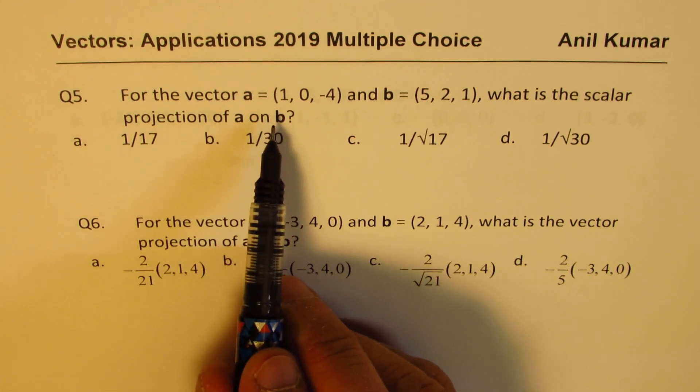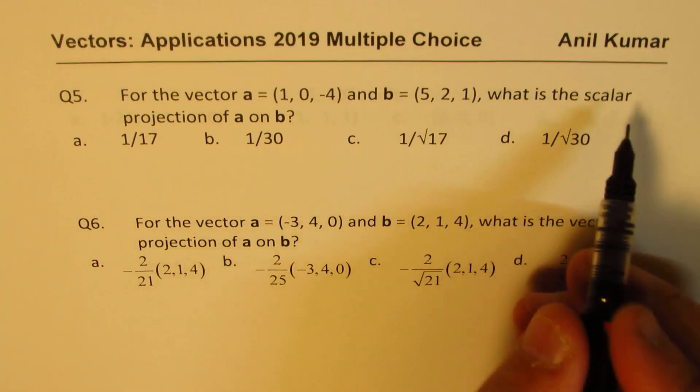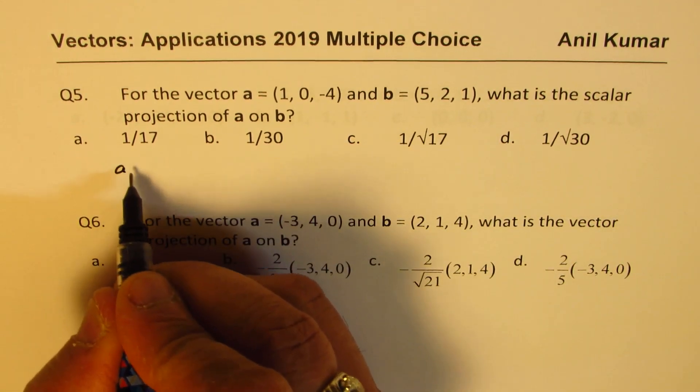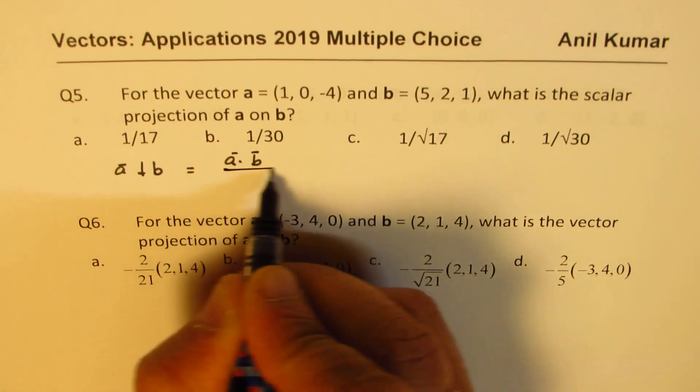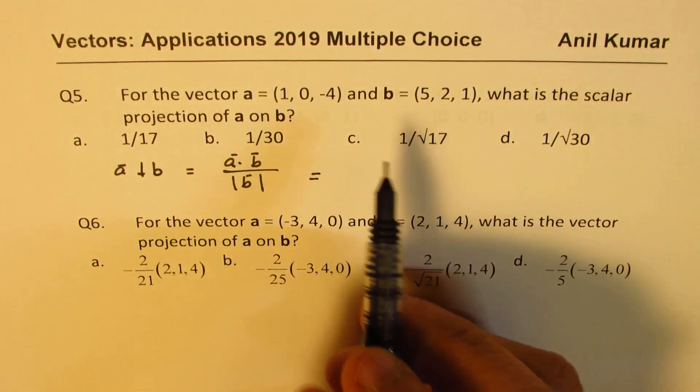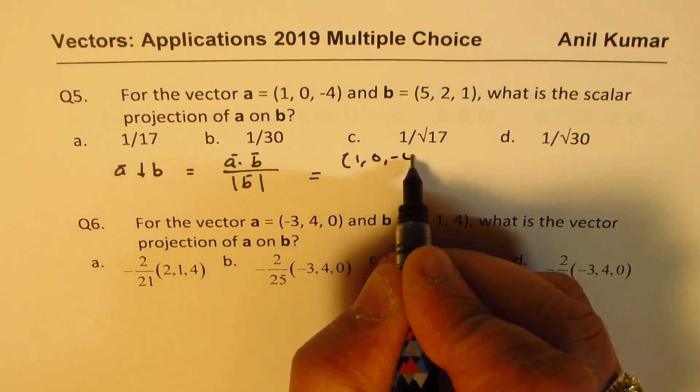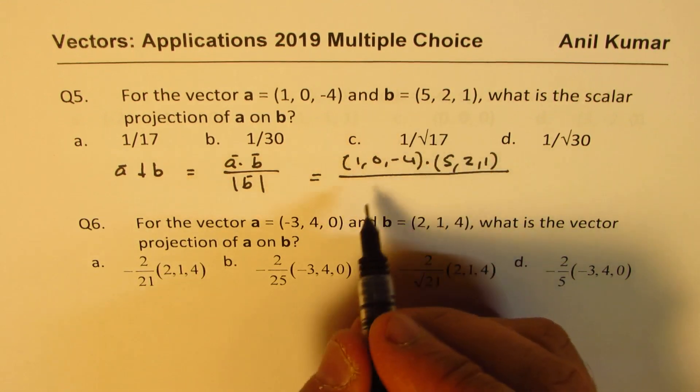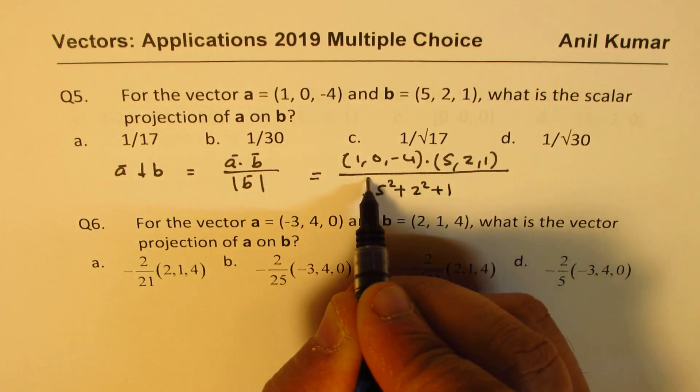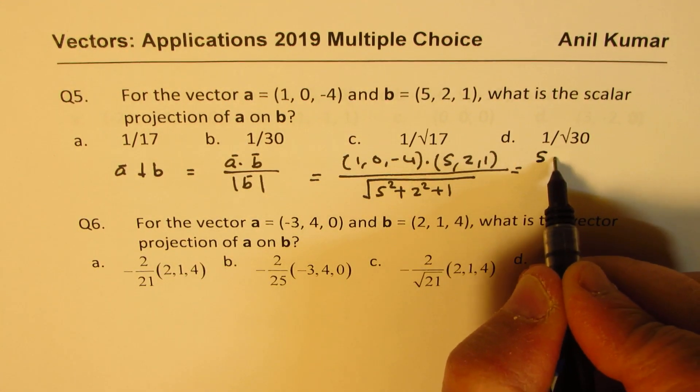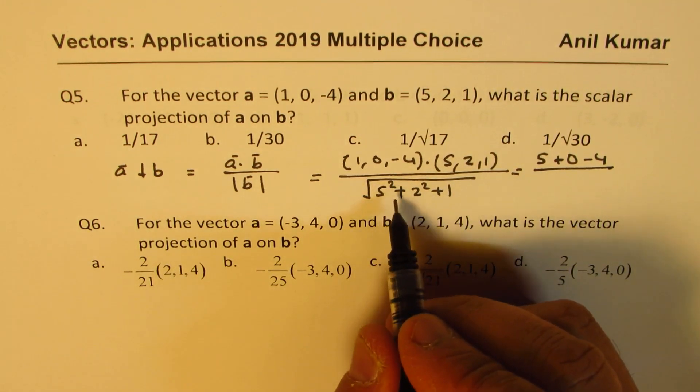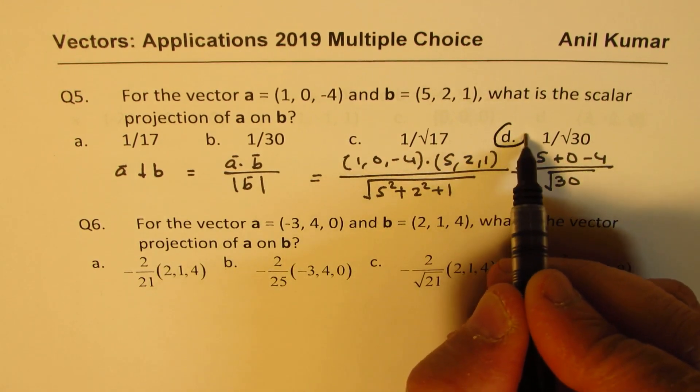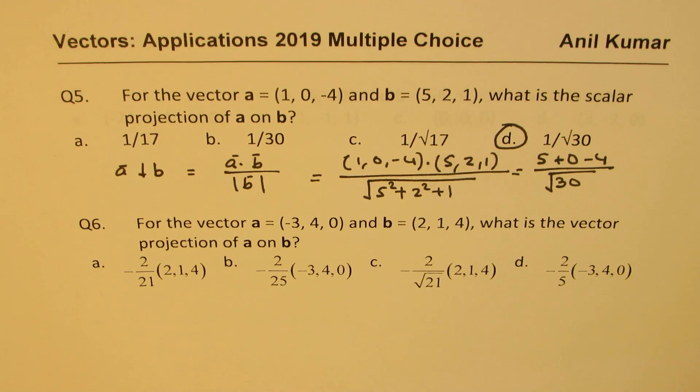Question number 5. If the vector A is (1, 0, -4) and B is (5, 2, 1), what is the scalar projection of A on B? We need scalar projection, just the magnitude. So scalar projection of A on B is basically A dot B divided by the magnitude of B. So we are given these two vectors. Let's find the dot product, (1, 0, -4)·(5, 2, 1), divided by the magnitude of B, which is square root of 5 squared plus 2 squared plus 1. So which is 5 plus 0 minus 4 over 25 and 4, 29 and 1 square root of 30. So we get 5 minus 4 is 1, so that becomes our answer.